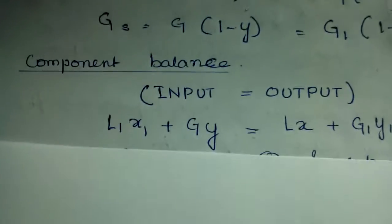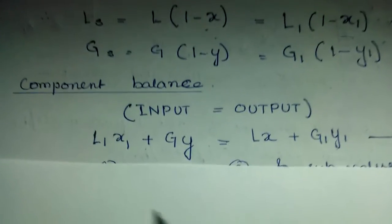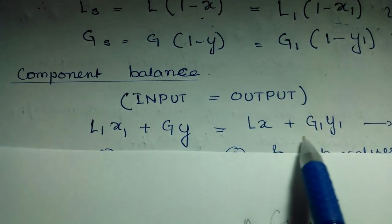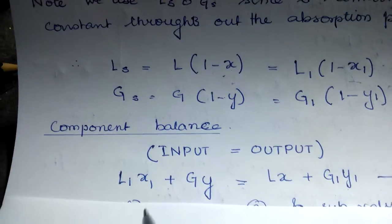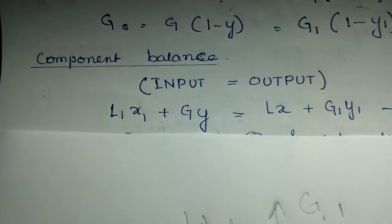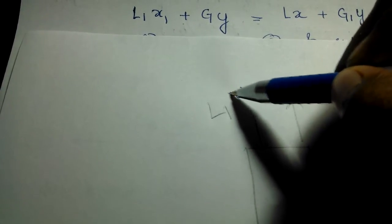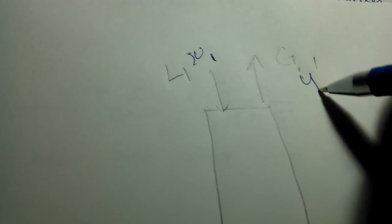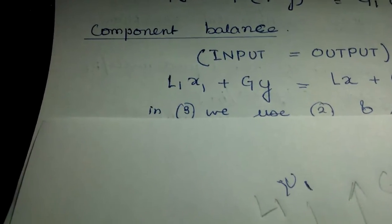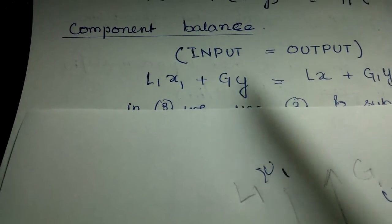Again, input equals output. I'm multiplying the fraction with the total and writing the component balance similar to the first one. L1 into x1, G into y - this is the input. And the output will be L into X and G1 into y1. On writing that, we get this equation.